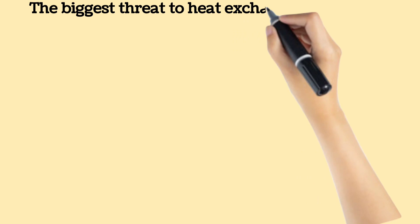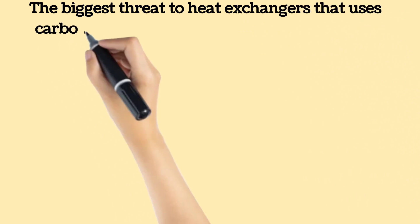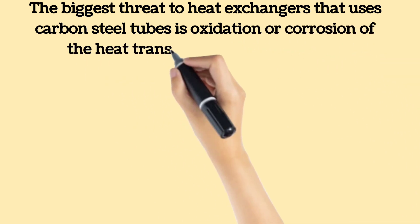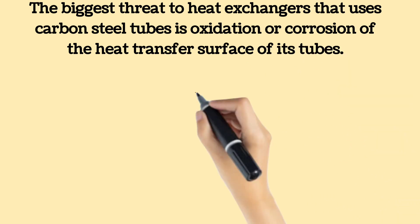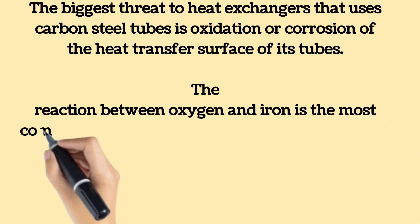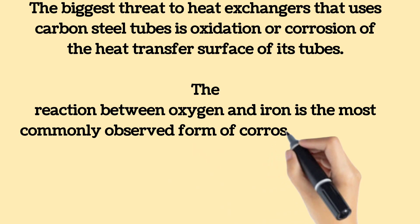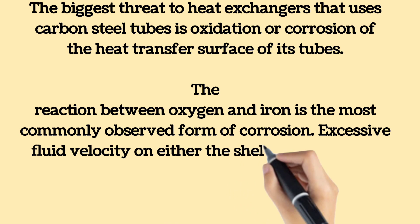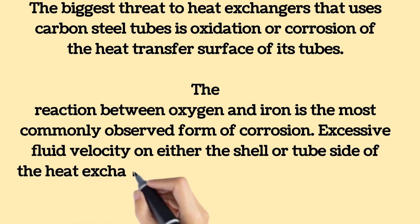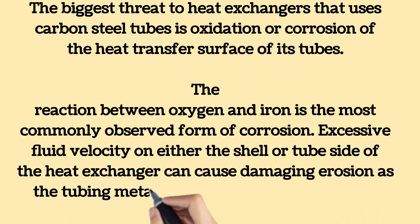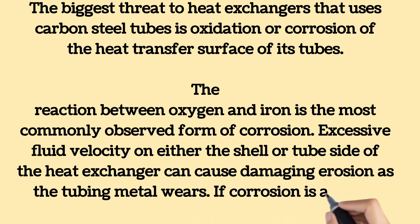The biggest threat to heat exchangers that use carbon steel tubes is oxidation or corrosion of the heat transfer surface of the tubes. The reaction between oxygen and iron is the most commonly observed form of corrosion. Galvanic corrosion is common in shell and tube heat exchangers at the contacts between the tubes and the baffles or tube sheets when different metals are used for those parts. Excessive fluid velocity on either the shell or tube side can cause damaging erosion as the tubing metal wears, and if corrosion is already present it can be accelerated, as erosion has the potential to remove the tube material's protective film, exposing fresh metal to further attack.